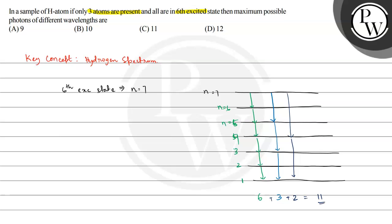So total number of photons will be 6 plus 3 plus 2, that is 11. So the total number of photons of different wavelengths are 11. Option C is the correct answer. This is the required solution, and I hope you understood the concept well.